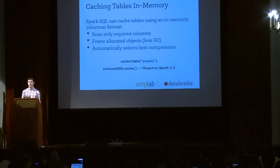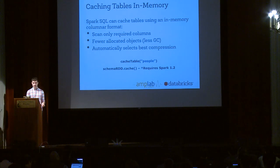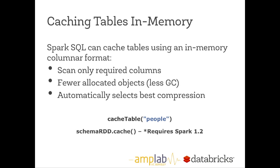Caching in Spark SQL is different from caching in standard Spark. We re-encode data using an efficient in-memory columnar format, limiting the memory bandwidth needed by only scanning required columns. We also allocate significantly fewer objects and automatically select the best compression. To use caching inside Spark SQL, just call cache_table with a table name — all queries over that table are then cached. Starting with Spark 1.2, if you call .cache on a schema RDD, it will automatically use our more efficient columnar caching. However, if you're using Spark before 1.2, don't call .cache on a schema RDD — call cache_table instead.